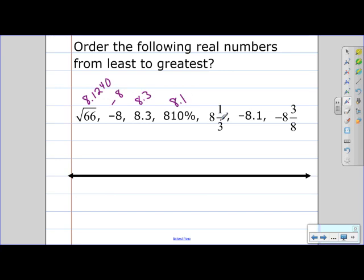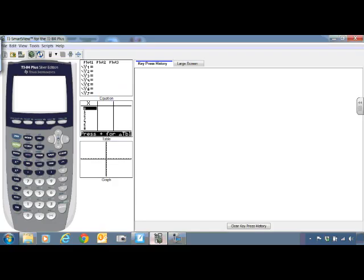Let's go to our calculator to convert 8 and one-third. So in your calculator, let's do alpha, y equals, option two. We want to type in our mixed number, eight.